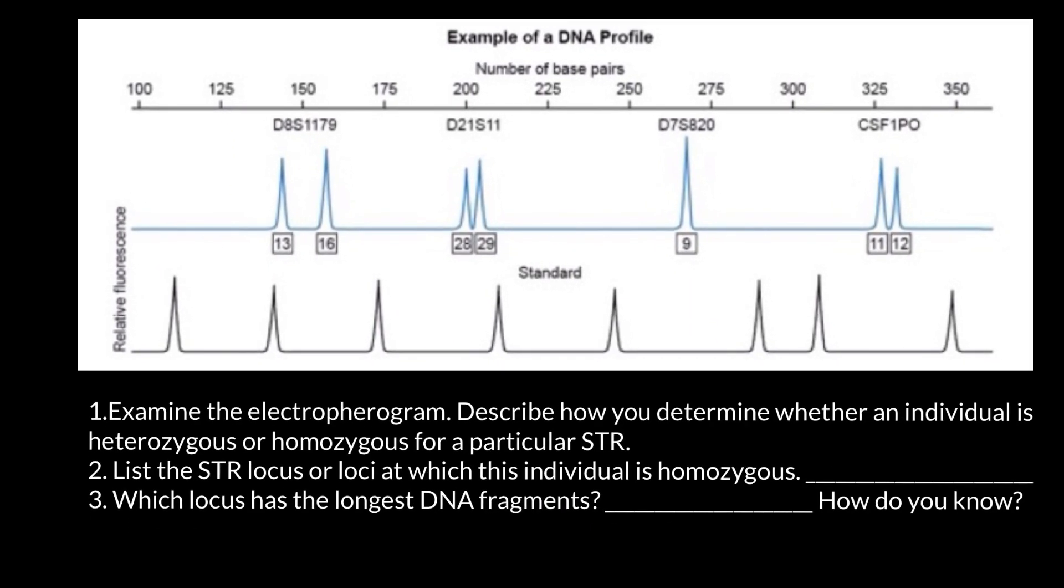Here's our problem: Examine the electropherogram, describe how to determine whether an individual is heterozygous or homozygous for a particular STR. STR stands for short tandem repeat. List the STR locus or loci at which this individual is homozygous.